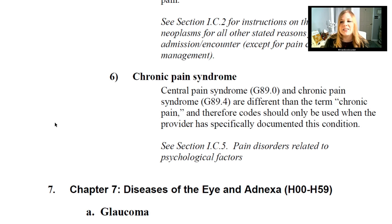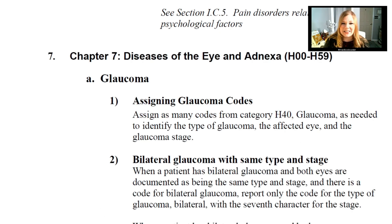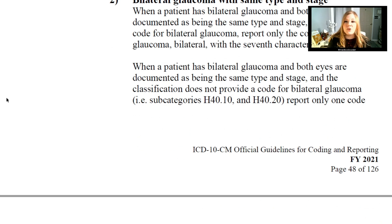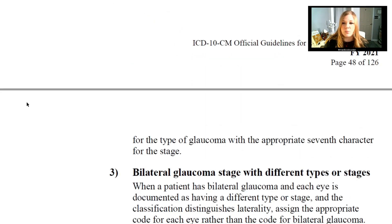Moving on to chapter seven, diseases of the eye and adnexa, starting with glaucoma. Assign as many codes from category H40 as needed to identify the type of glaucoma, the affected eye, and the glaucoma stage — you could have different stages in different eyes. For bilateral glaucoma with the same type and stage where a bilateral code exists, report that bilateral code using the seventh character for the stage. When both eyes are the same type and stage but no bilateral code exists in the classification, report only one code for the type of glaucoma with the appropriate seventh character for the stage.